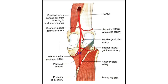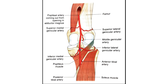The superior medial and superior lateral genicular arteries wind around the corresponding sides of the femur and pass deep to the hamstring muscles. The middle genicular artery pierces the oblique popliteal ligament of the knee and supplies the cruciate ligaments and synovial membrane of the knee joint. The medial and lateral inferior genicular arteries wind around the corresponding tibial condyles and pass to the collateral ligaments of the knee. All these arteries reach in front of the knee and take part in forming the anastomosis around the knee joint.